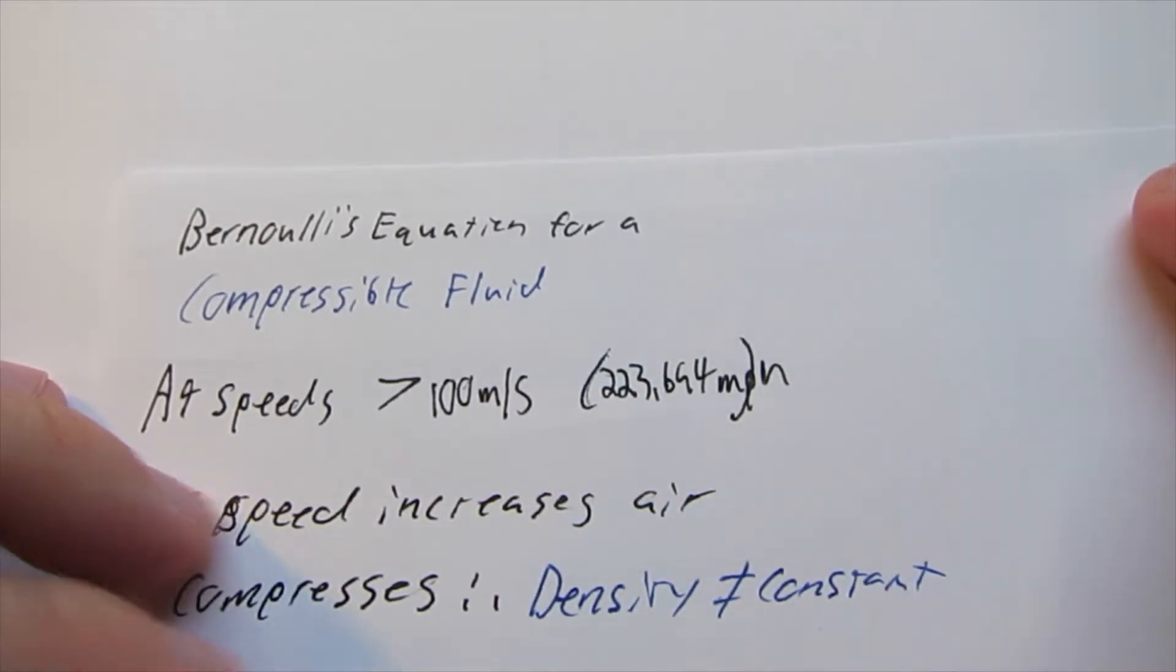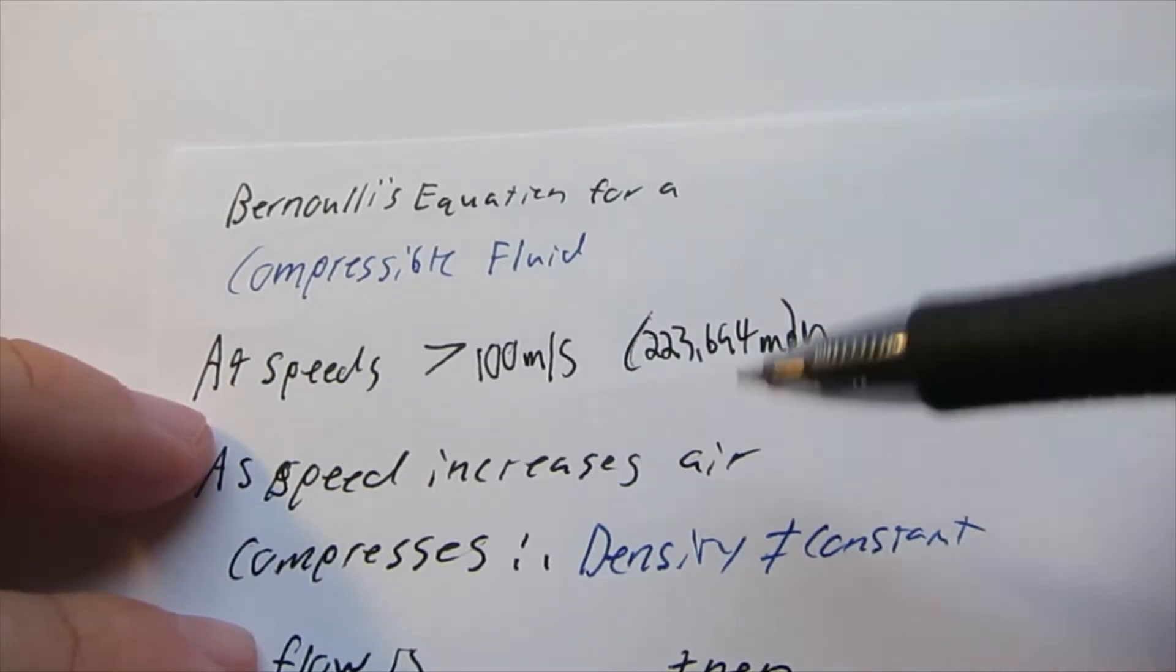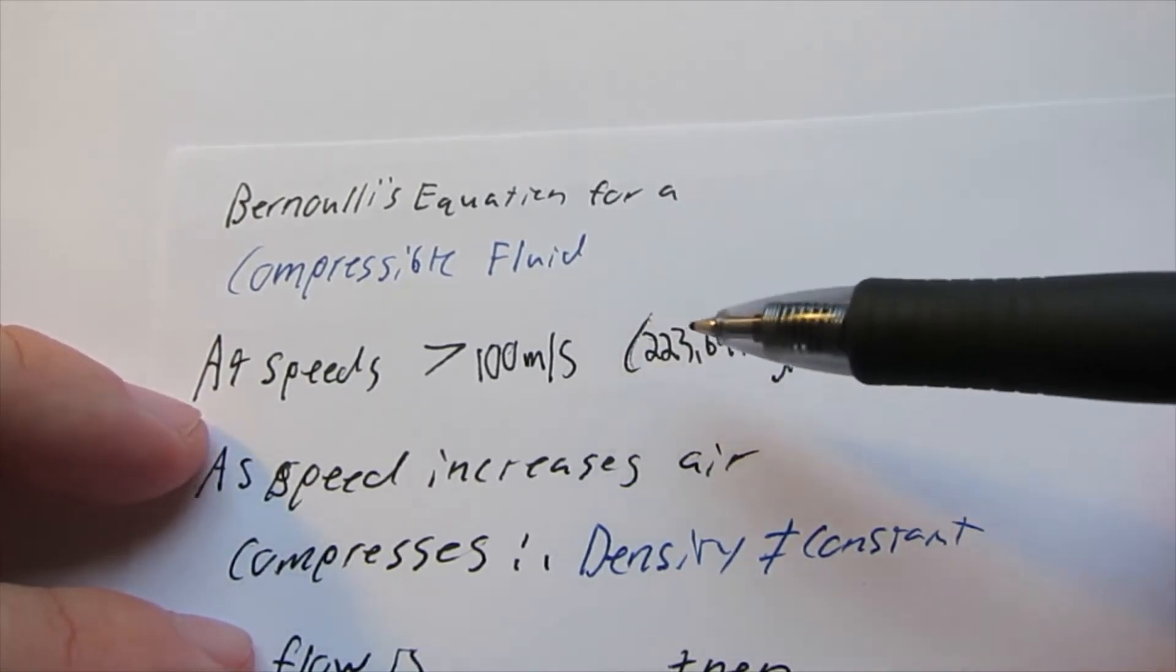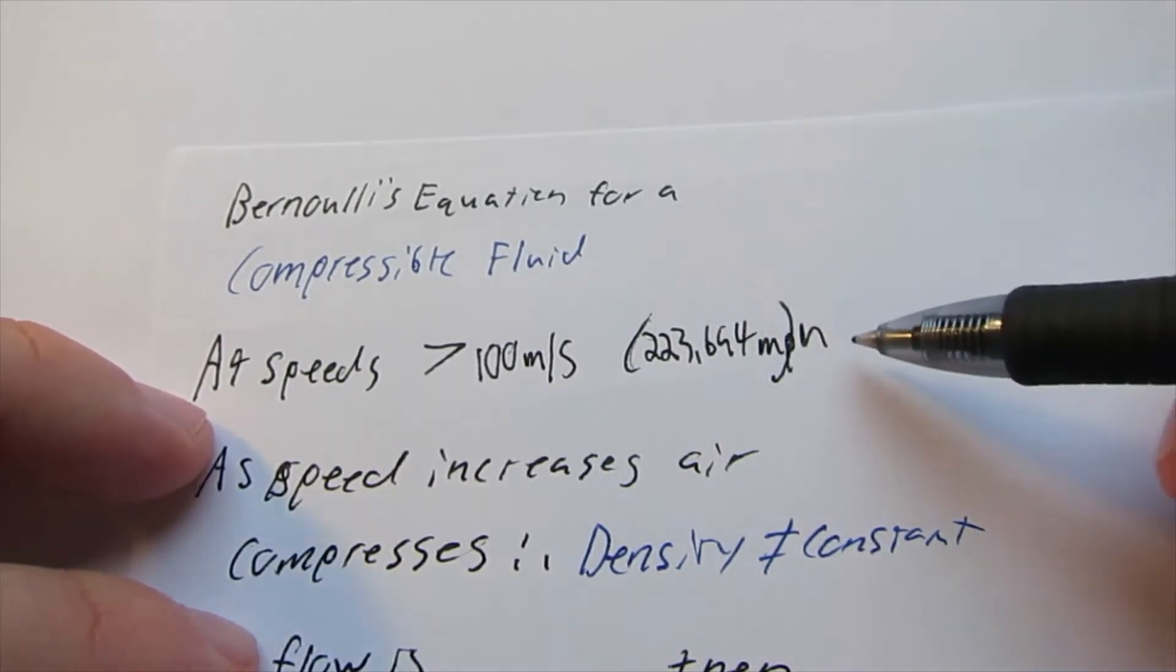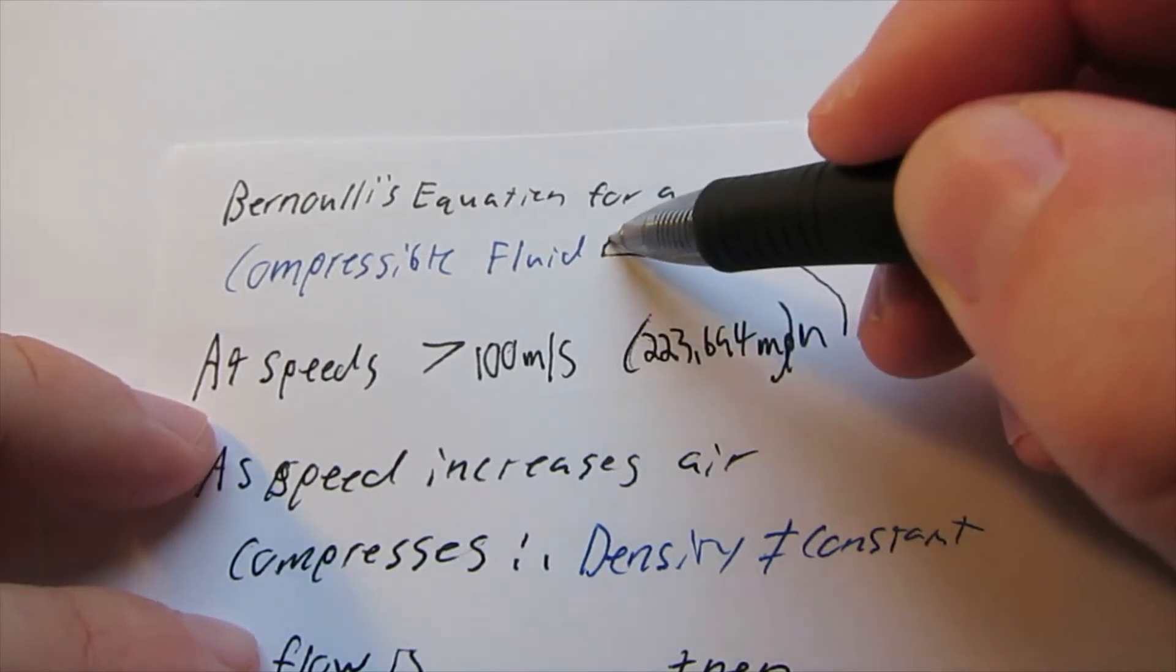At speeds greater than 100 meters per second, or 223 miles per hour, we can't assume that the flow is incompressible, we now have to assume that it is compressible.